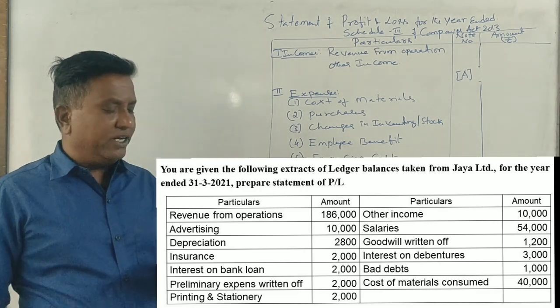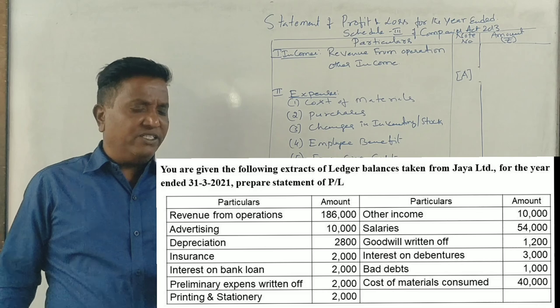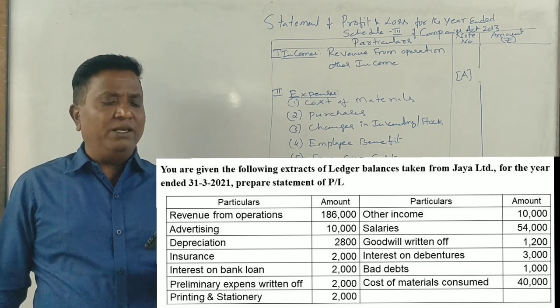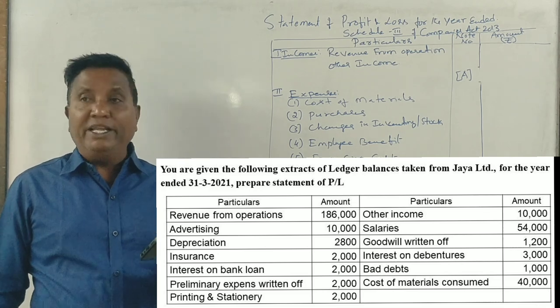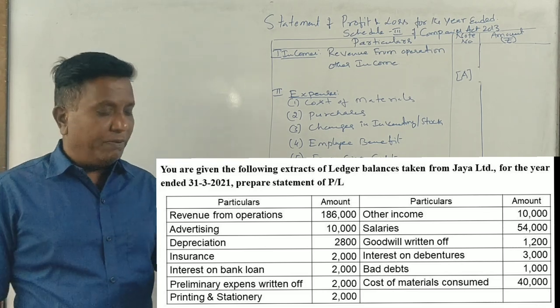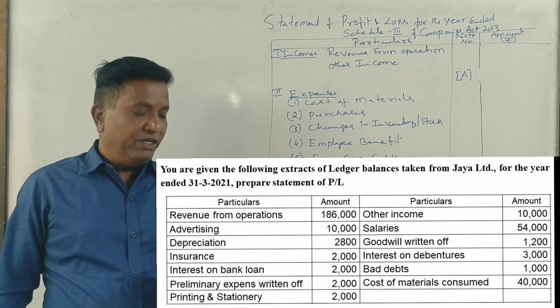You are given the following extracts of the financial balance taken from Jaya Limited for year ending March 2021. Prepare a statement of profit and loss.